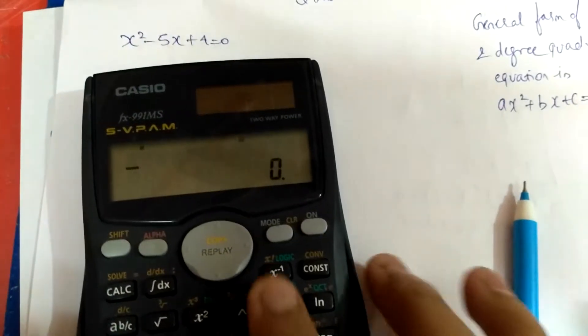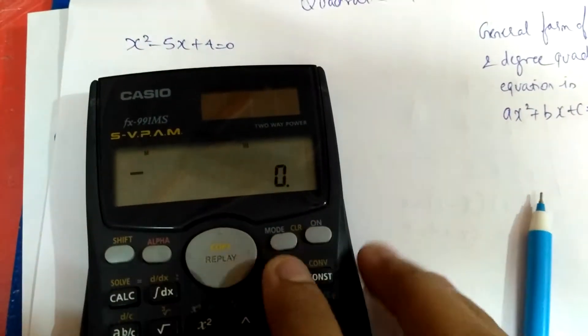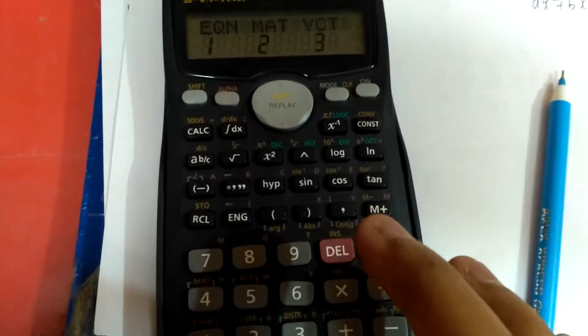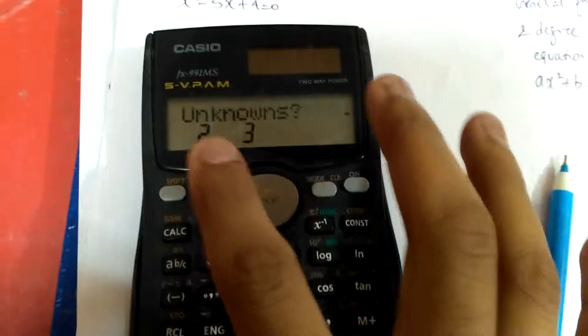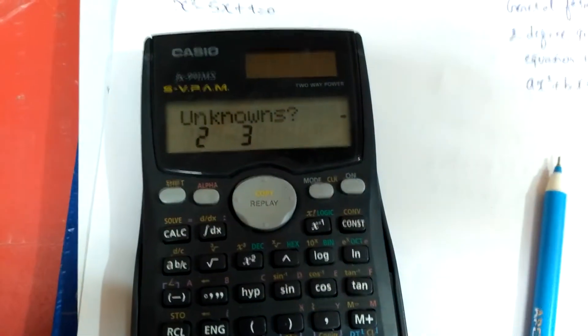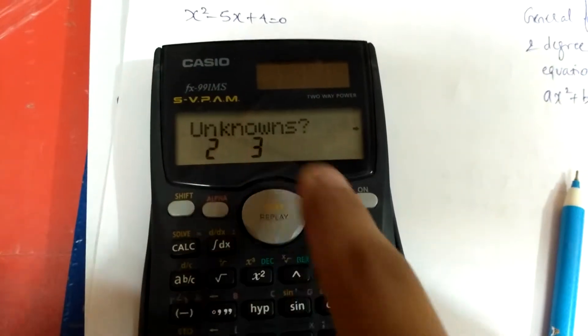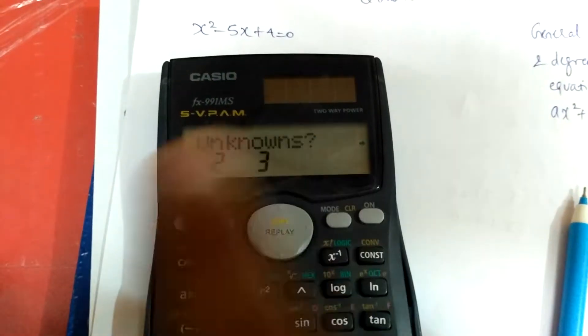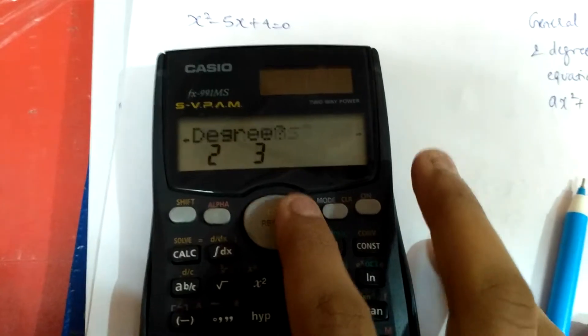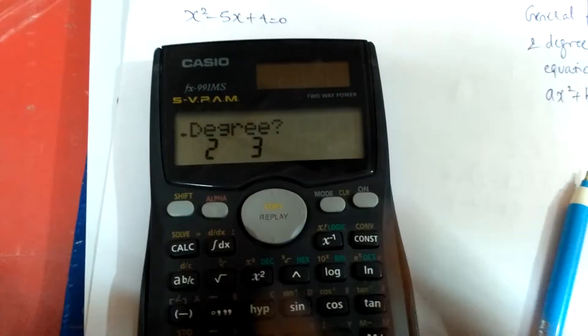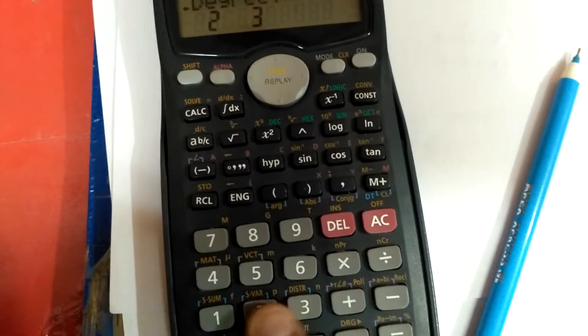First switch on, and to get into the equation mode you have to press this mode button 3 times. Then press 1 and you can see it is showing 2 or 3. If you want to solve 2 equations or 3 equations you can use this mode, but right now we are solving a 2 degree quadratic equation. So we will get into the degree mode by pressing this right button — 2 or 3 — and we will press 2.